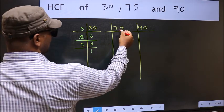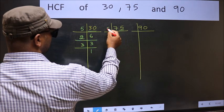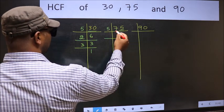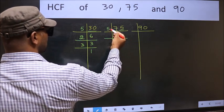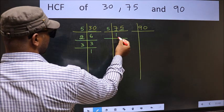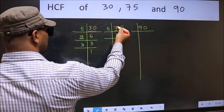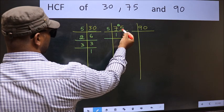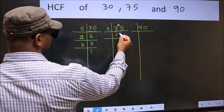Now the other number. Last digit 5 so take 5. First number 7. A number close to 7 in 5 table is 5 ones 5. 7 minus 5, 2, 2 carried forward 25.